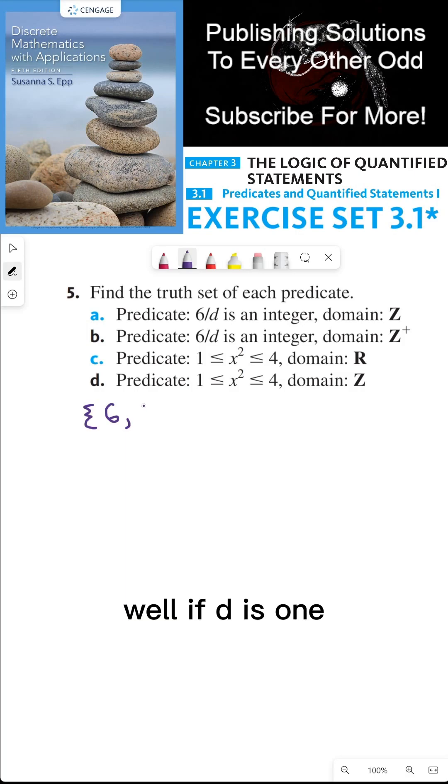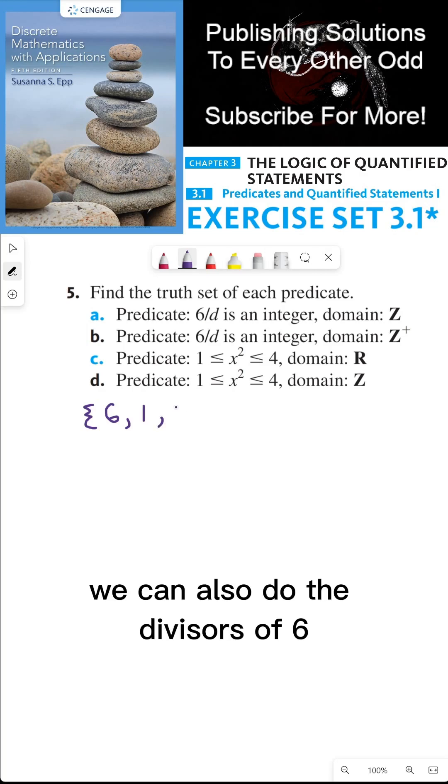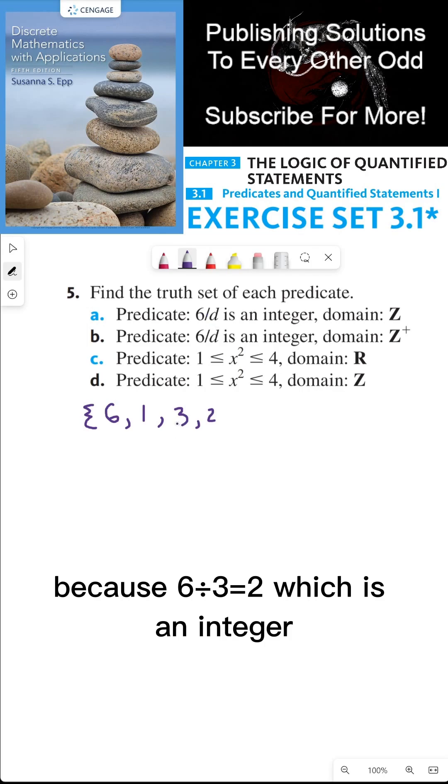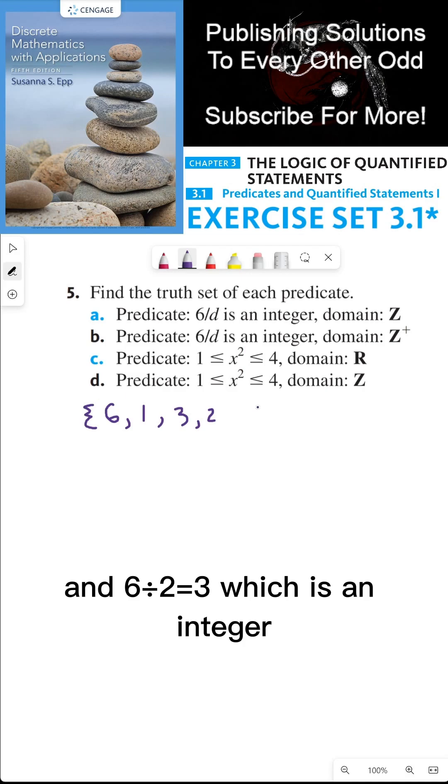Well, if D is 1, then 6 over 1 is an integer because 6 over 1 is 6, so that works. We can also do the divisors of 6, like 3 and 2, because 6 divided by 3 is 2, which is an integer, and 6 divided by 2 is 3, which is an integer.